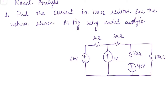Our first step is to identify how many nodes are there — nodes where we can apply KCL. We have node 1, node 2, and node 3. I am assigning node 3 as the reference, and with respect to this reference, I assign the voltage to the first node as V1 and to the second node as V2.